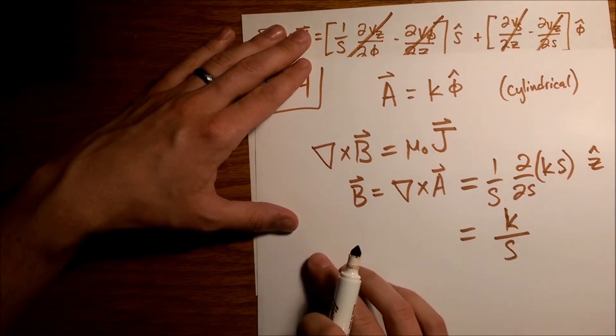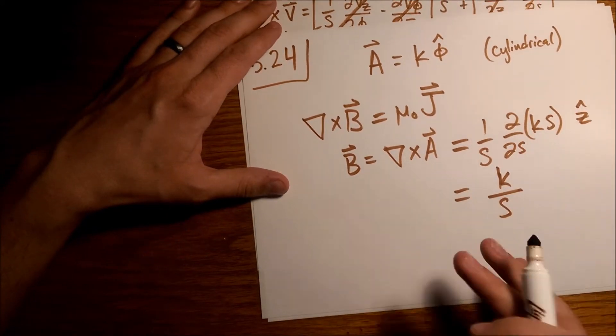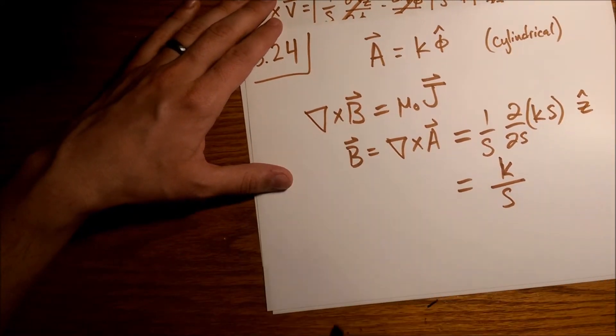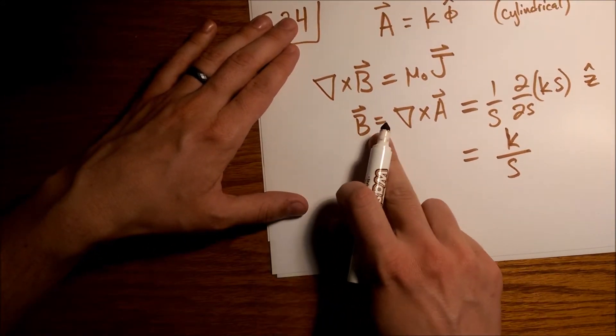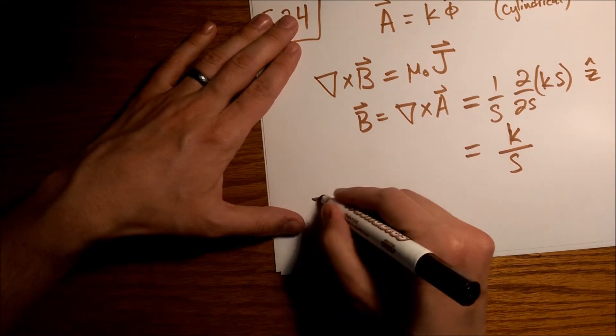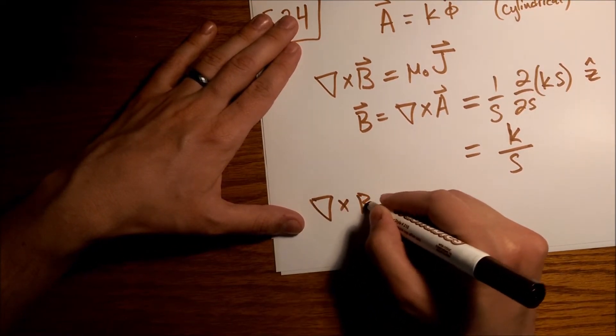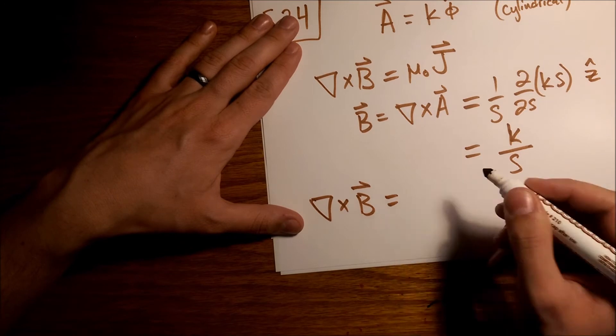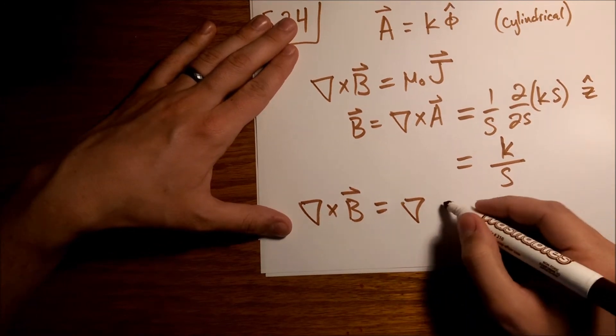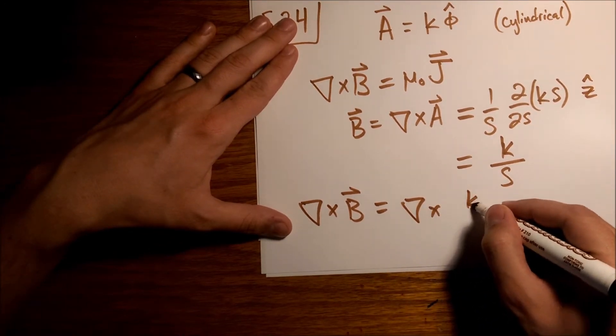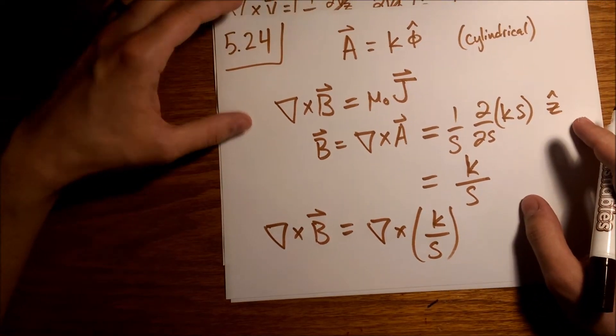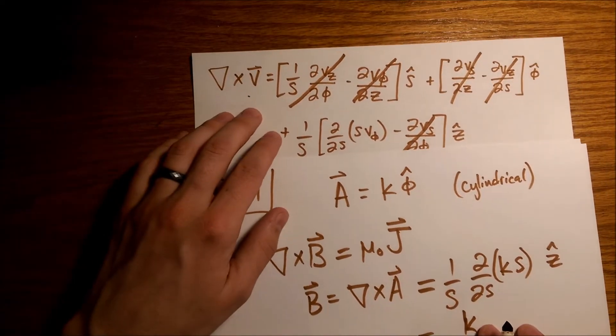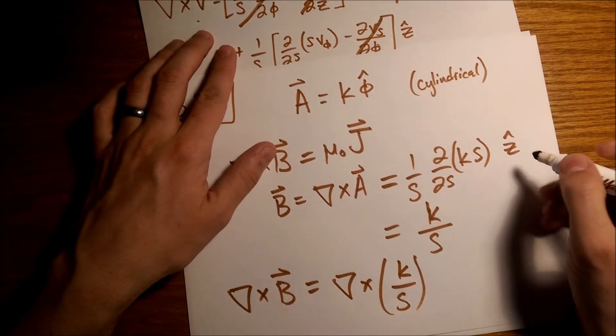Now to find j, which is the current that we're looking for in the end, we need to take the curl again, so now we'll be taking the curl of both sides of this equation, so meaning the curl of B is equal to the curl of this thing. And we are right back to our old friend, this thing that I crossed out.